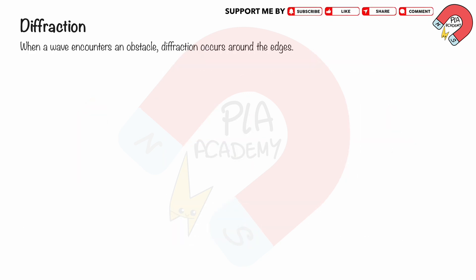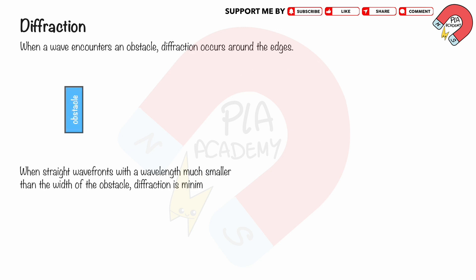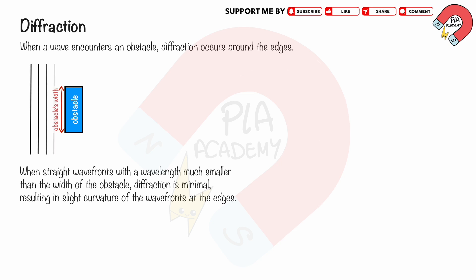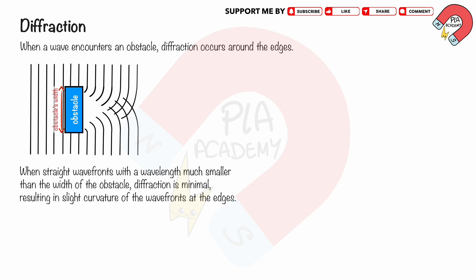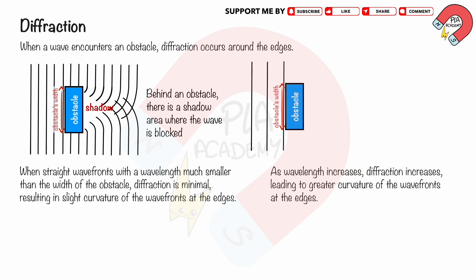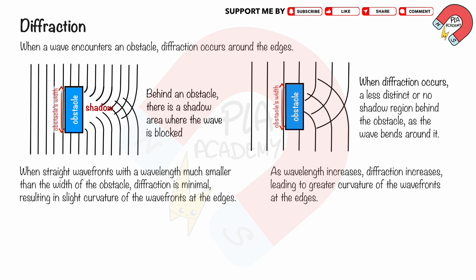When a wave encounters an obstacle, diffraction occurs around the edges. When straight wave fronts have a wavelength much smaller than the width of the obstacle, diffraction is minimal, resulting in slight curvature at the edges and creating a shadow region behind the obstacle. As wavelength increases, diffraction increases, leading to greater curvature and a less distinct or no-shadow region as the wave bends around the obstacle.